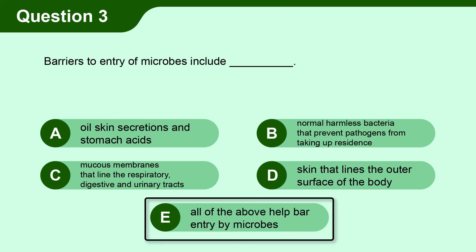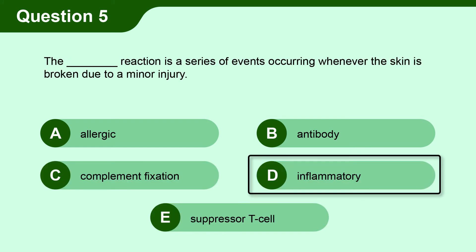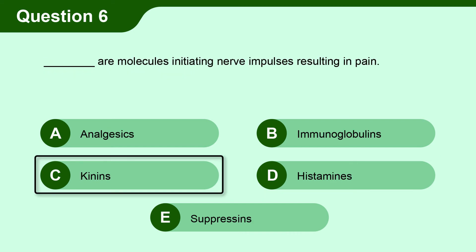Question 3. Barriers to entry of microbes include E. All of the above help bar entry by microbes. Question 4. The stomach has a basic pH inhibiting growth of bacteria. B. False. Question 5. The D. Inflammatory reaction is a series of events occurring whenever the skin is broken due to minor injury. Question 6. C. Kinins are molecules initiating nerve impulses resulting in pain.